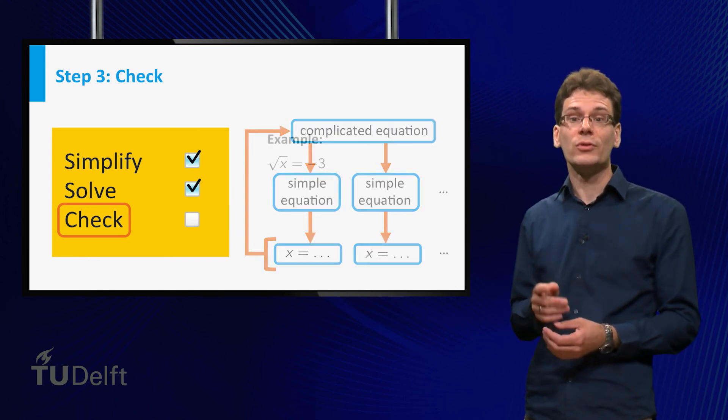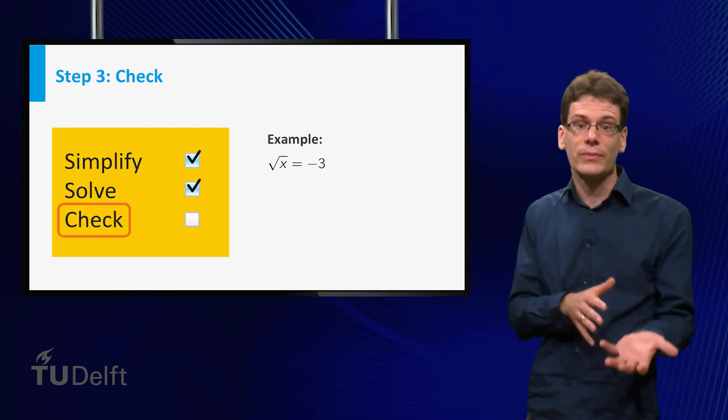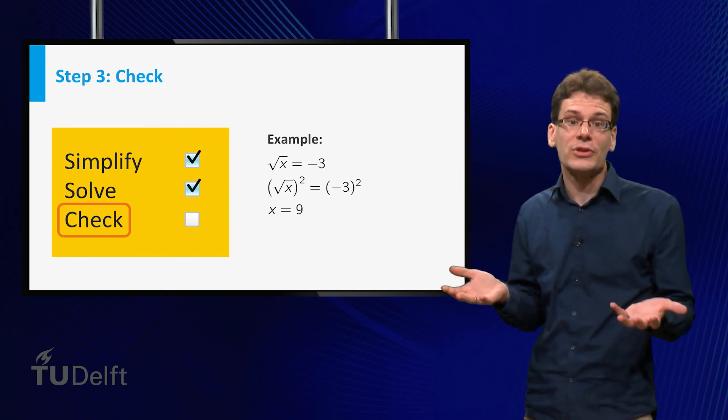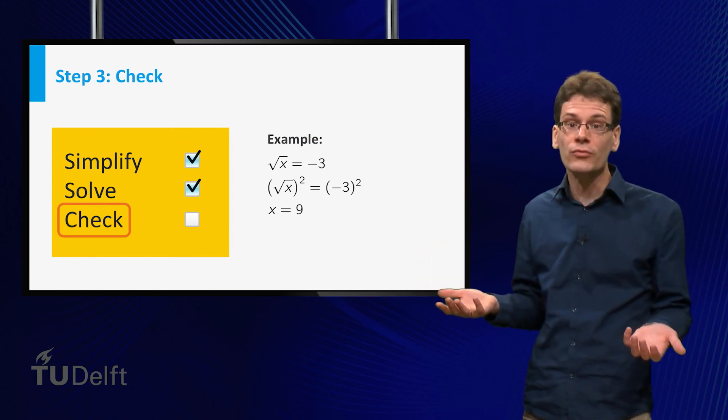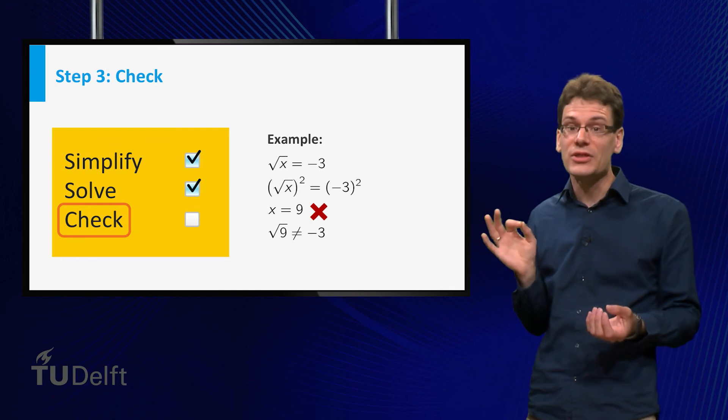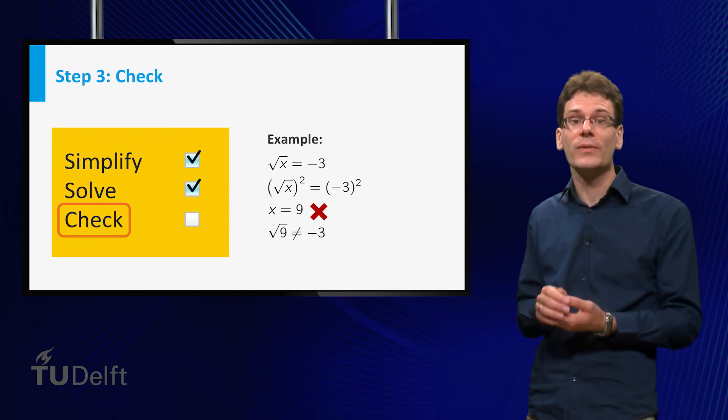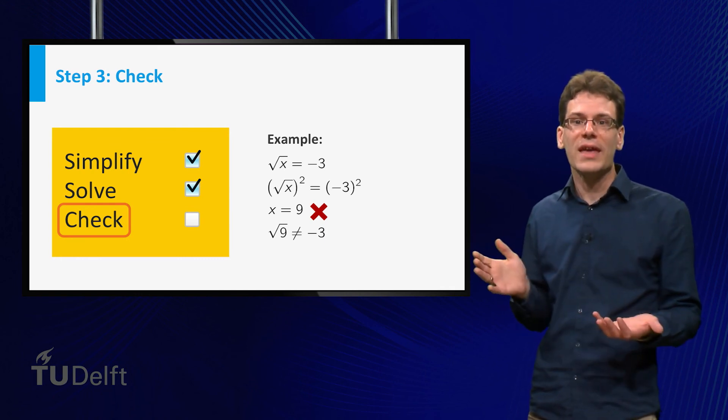For example, consider the equation square root of x equal to minus 3. You can square both sides to obtain x equal to 9. This is a legitimate move, but check that x equal to 9 is not a solution of the original equation. What is the mistake here?